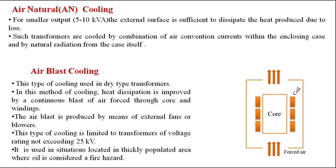For the dry type of transformer, that is smaller capacity transformer, we are adopting two methods. For air natural cooling, in the range of 5 to 10 kVA, the external surface is sufficient to dissipate the heat. You simply keep the transformer wherever it is being used, and the natural air around the transformer is sufficient for cooling. Such transformers are cooled by a combination of air convection currents within the enclosing case and by natural radiation from the case itself.